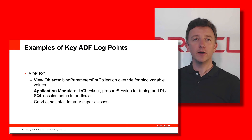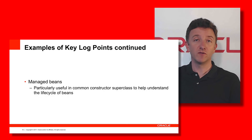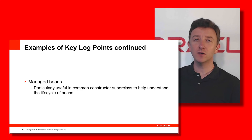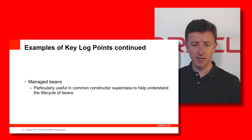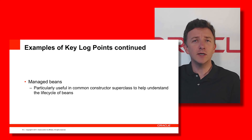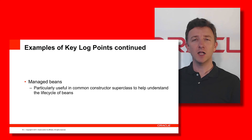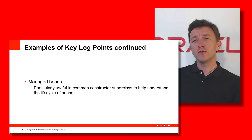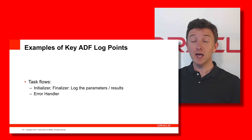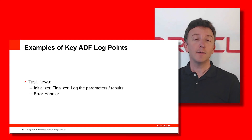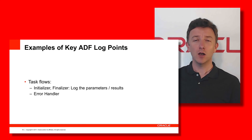Junior programmers often get confused about the life cycle of managed beans in JSF or ADF Faces. When beans get instantiated — is it every request, or over the life of a bounded task flow? A really obvious place to add logging is on the constructors of your managed beans. I've found situations where a managed bean was re-instantiated unexpectedly, causing a null pointer exception because another bean assumed it was still alive but its values had been wiped. In the ADF controller, task flow input and output parameters are great logging points, as are error handlers in task flows.